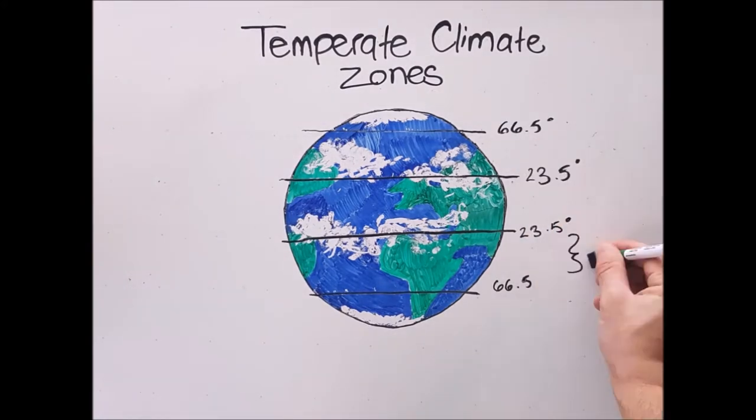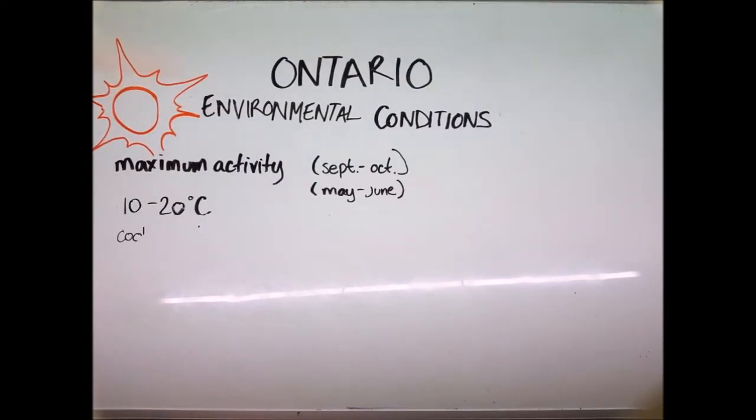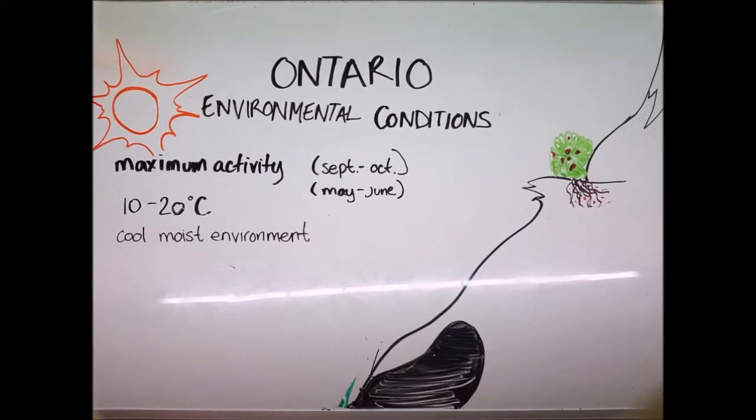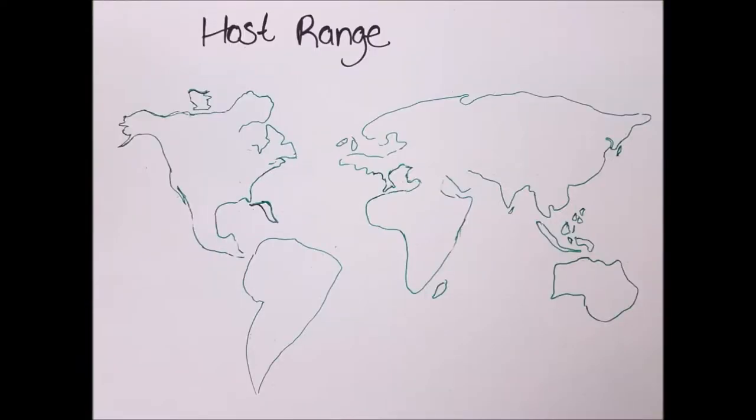The temperate zone is in the range of 23.5 and 66.5 degrees north and south on the latitudinal plain. Ditylenchus dipsaci prefers cool, moist climates, and populations are usually the greatest in Ontario in the spring and fall months. The maximum activity and invasive ability of Ditylenchus dipsaci is generally between 10 and 20 degrees Celsius.